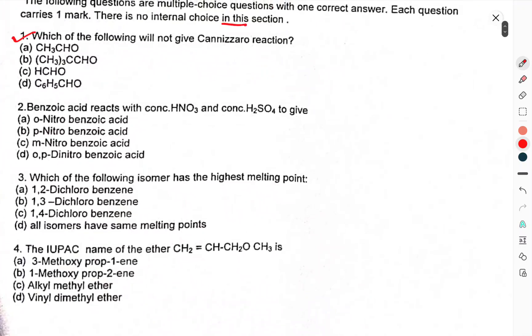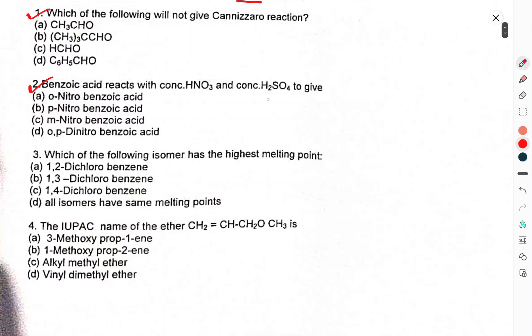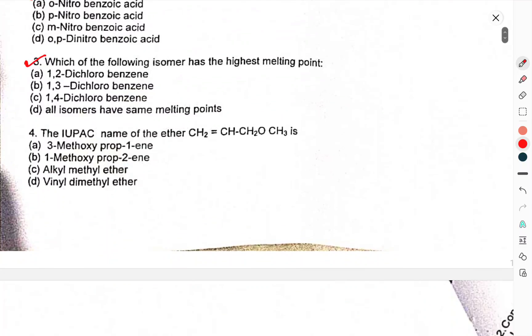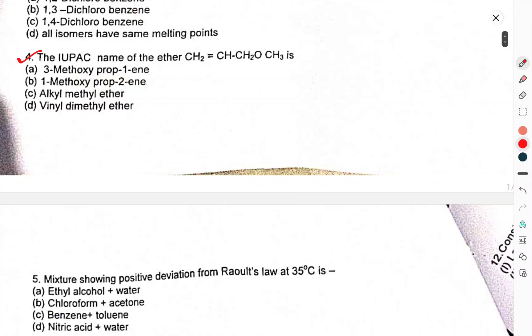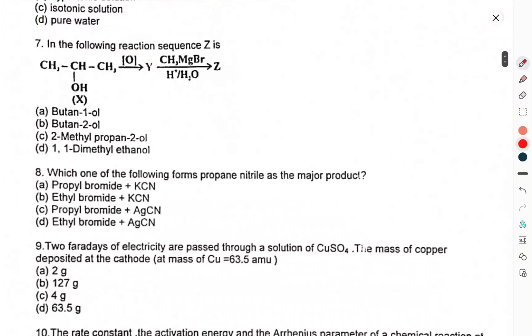Question 2: When benzoic acid reacts with concentrated H2SO4, give... Question 3: Which of the following isomer has highest melting point? Question 4: The IUPAC name of the ether CH2=CHOH-CH3 is. Question 5: Mixture showing positive deviation from Raoult's law at 35°C is.